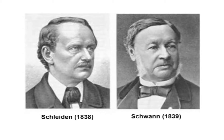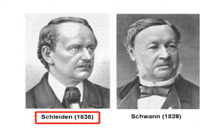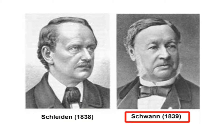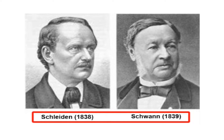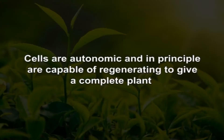Extensive microscopic studies led to the independent and almost simultaneous development of the cell theory by Sliden in 1838 and Schwann in 1839. Sliden and Schwann put forward the so-called totipotency theory, which says that cells are autonomic and in principle are capable of regenerating to give a complete plant. Their theory was in fact the foundation of plant cell and tissue culture.